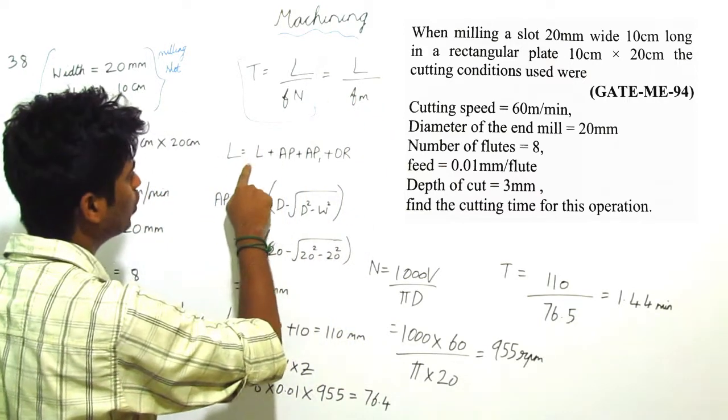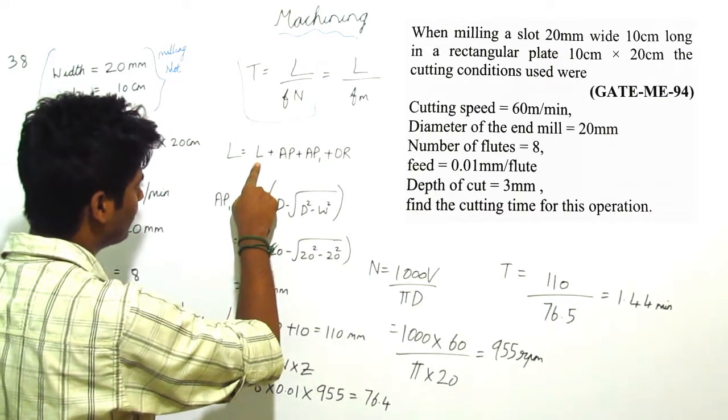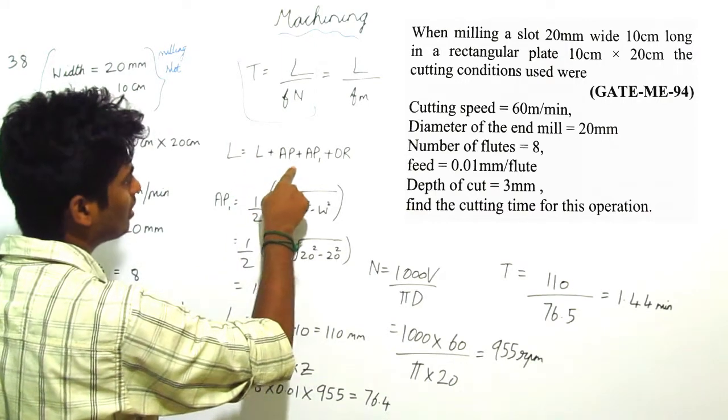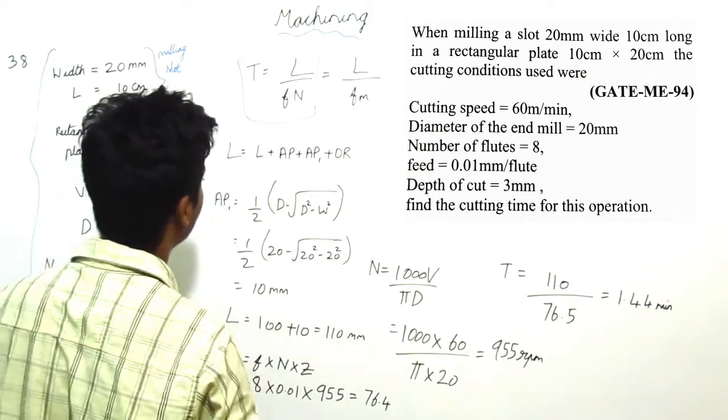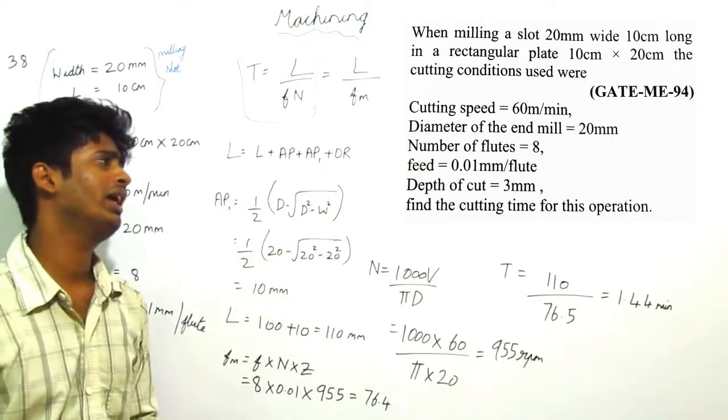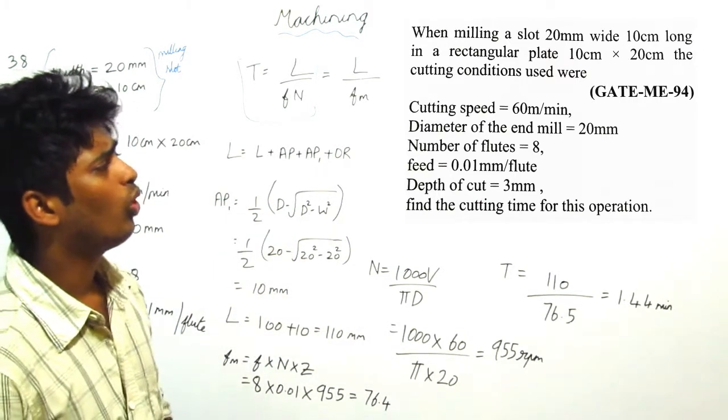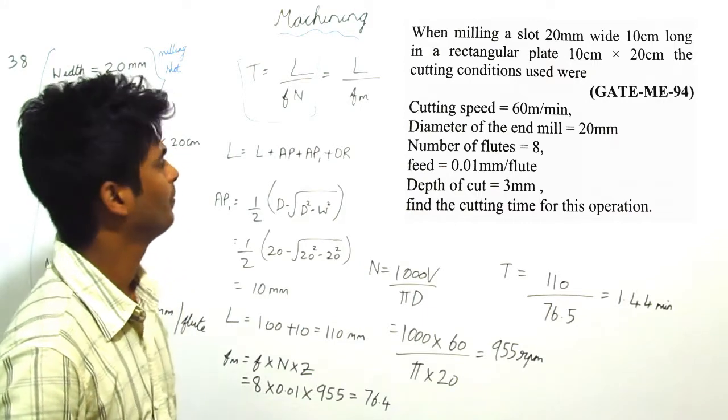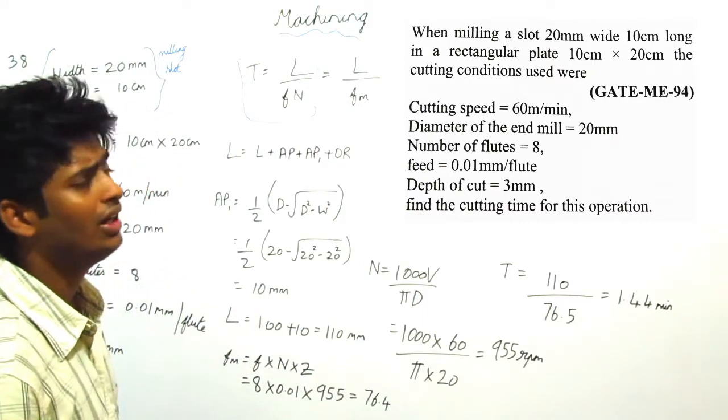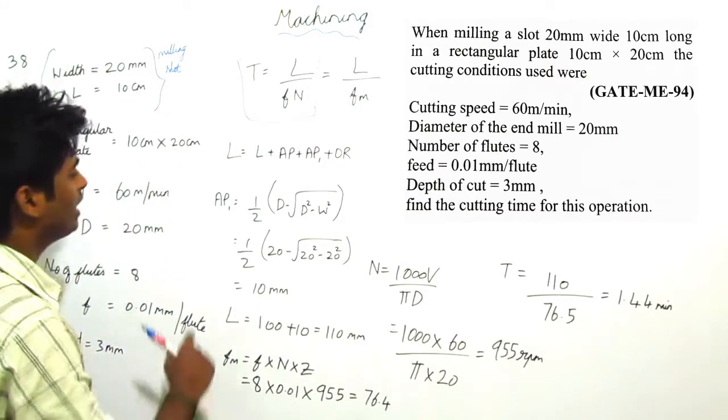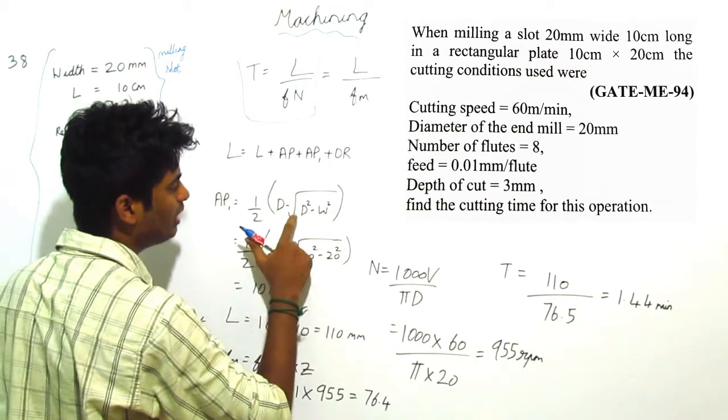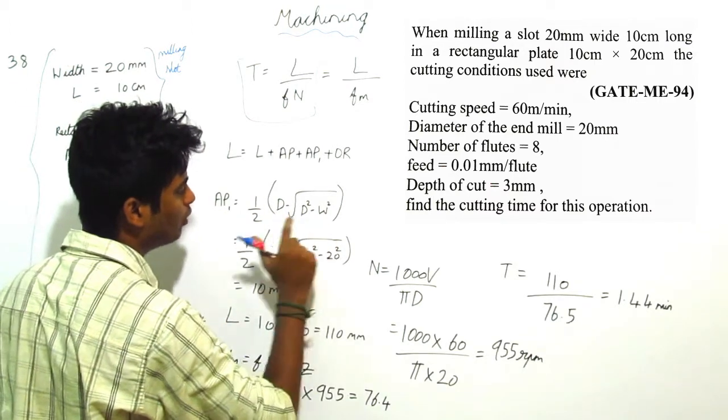Total length L is equal to length of the workpiece L plus approach plus overshoot. In the question they have to mention what type of milling process it is. So we are assuming it is end and face milling. So we are taking a1 as half into capital D minus root of capital D minus W square.